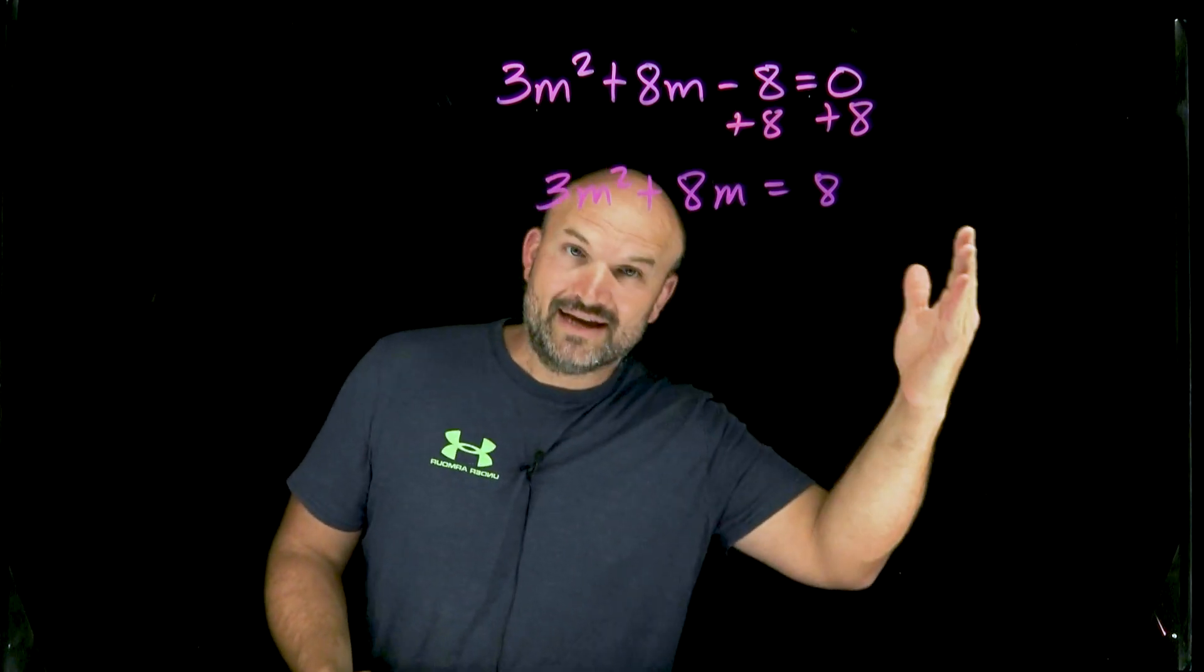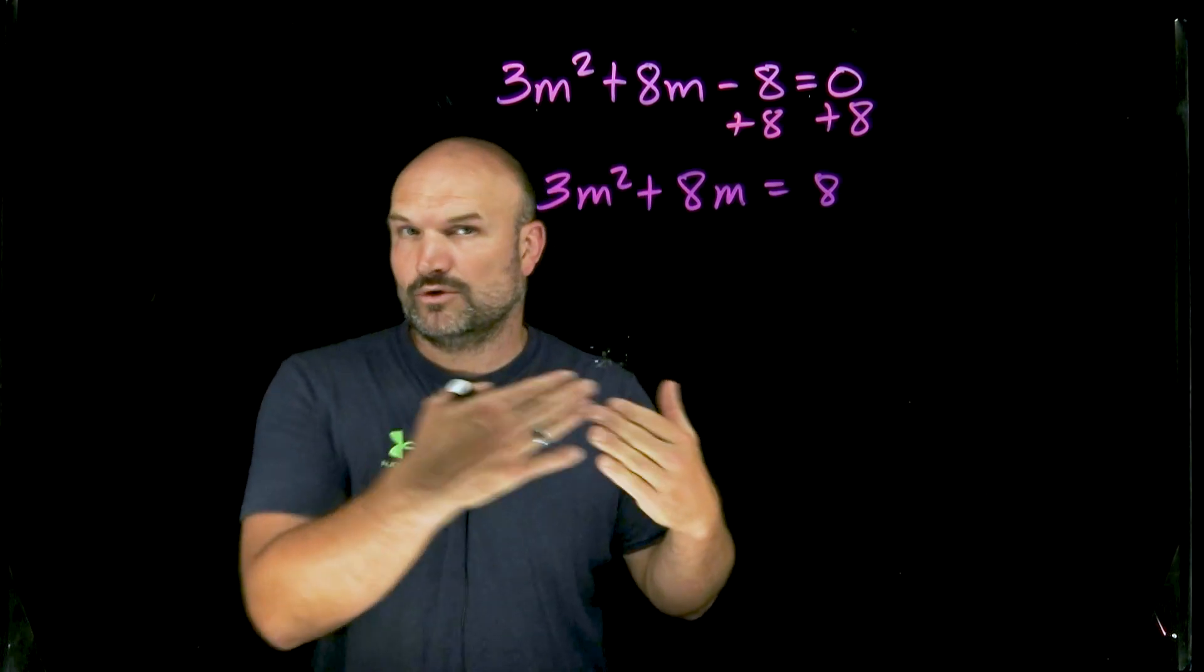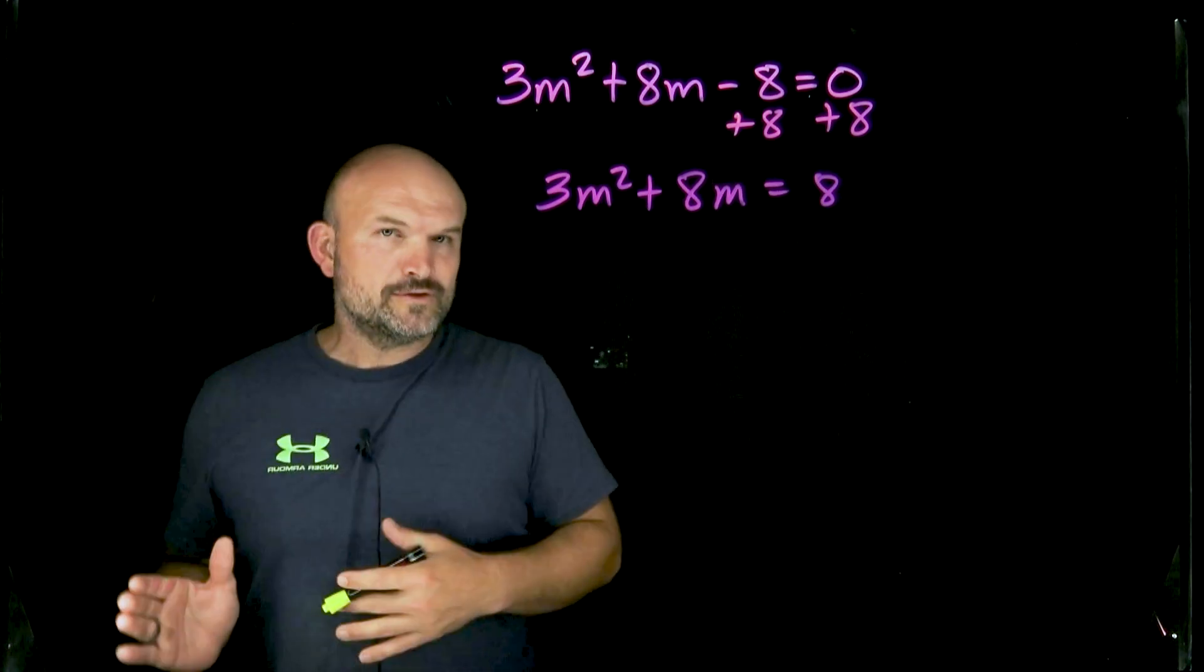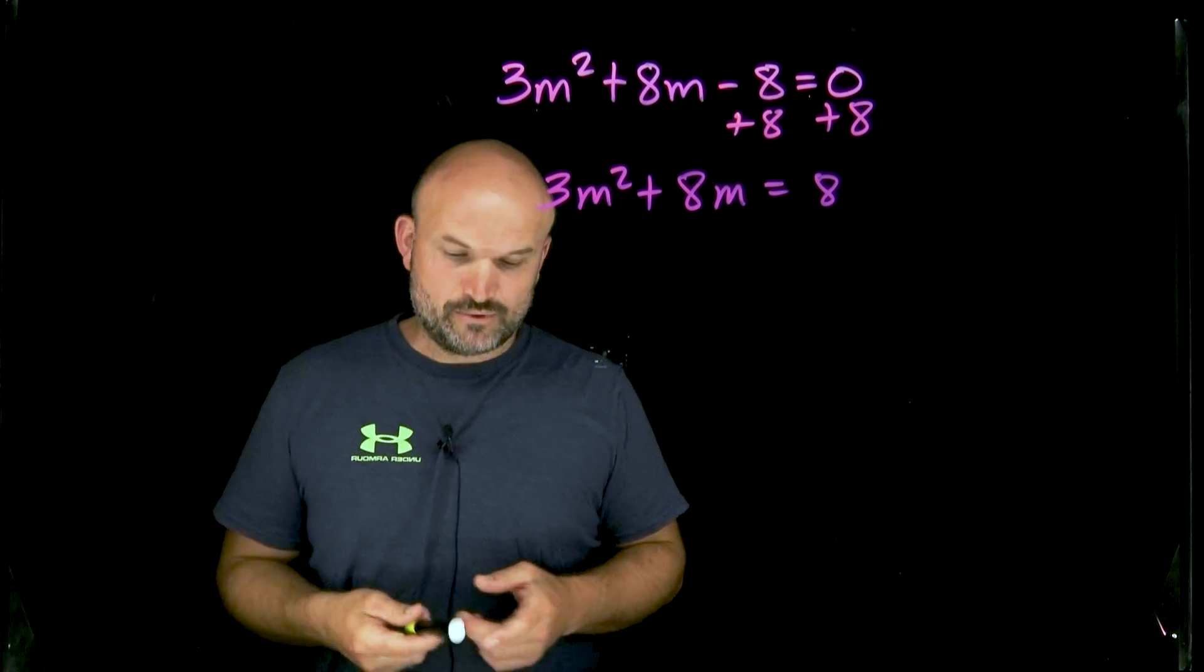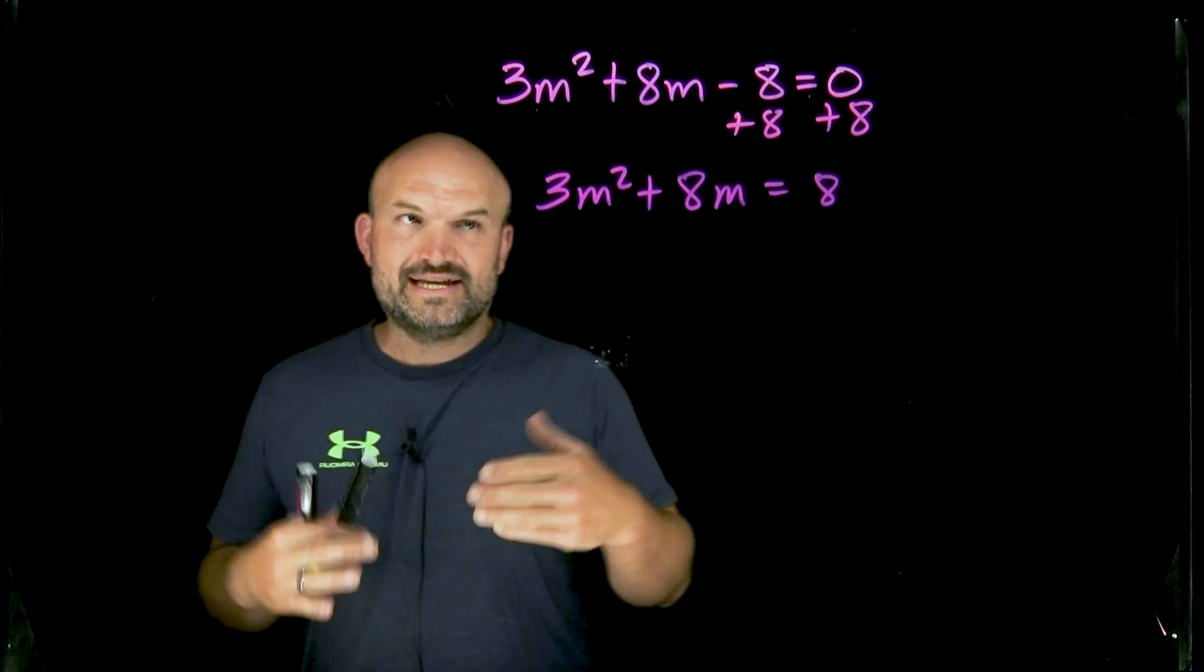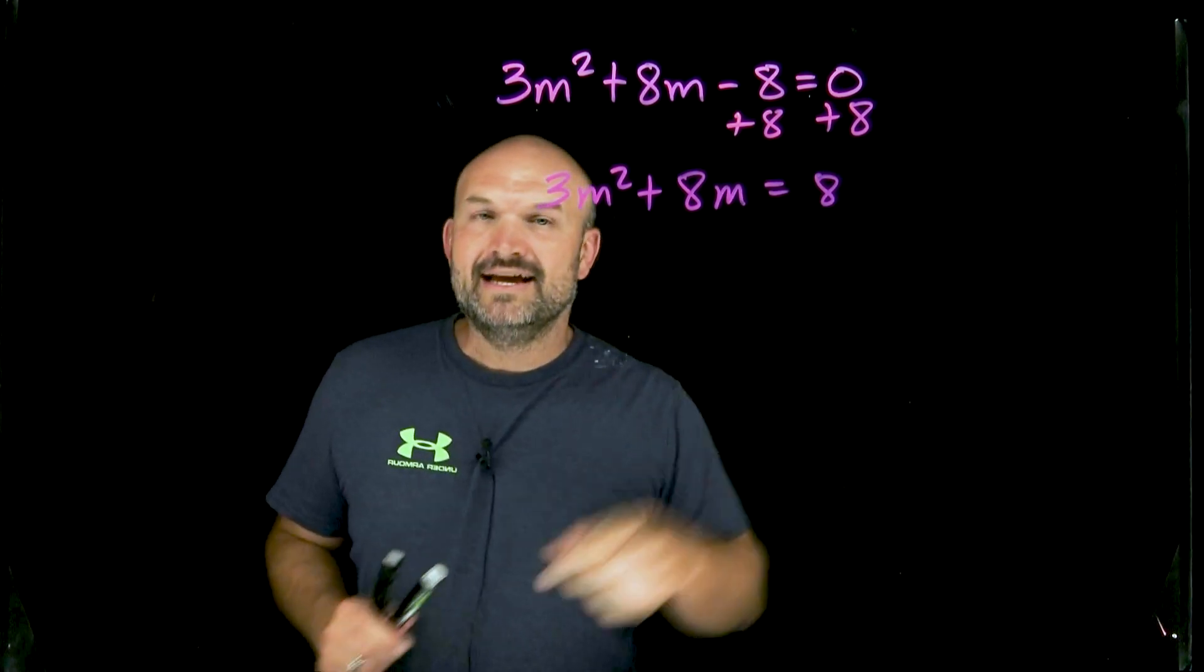One way is to divide out that by every single term, which is the way that we're going to use. And the other way is to go ahead and factor out the three, which I like to use when we are graphing a quadratic by completing the square. But for this video, let's go and see what is going to happen when I divide everything by three.